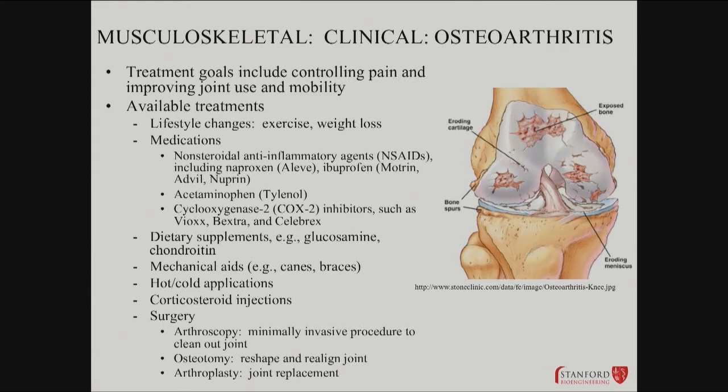Anti-inflammatory agents help a little bit, but they have their own risks with chronic use. You can have GI bleeds, kidney failure, and so on. Dietary supplements might help — it's a little less clear. This is an extreme form of anti-inflammation, but sometimes corticosteroid injections are done.